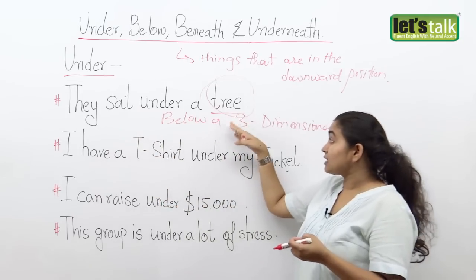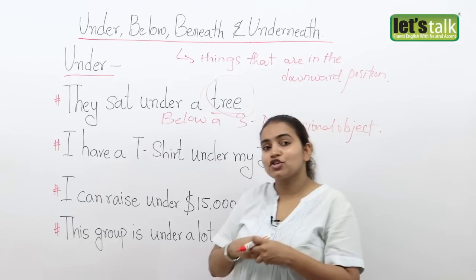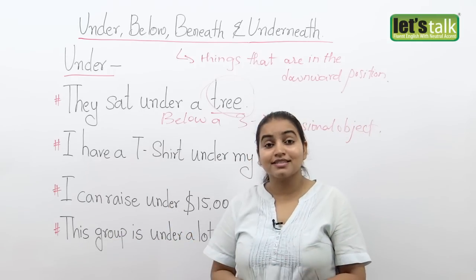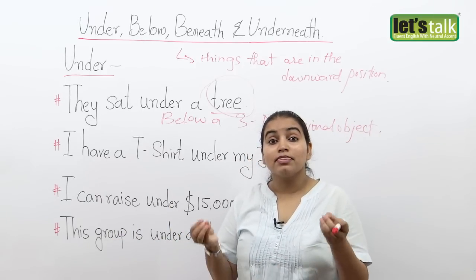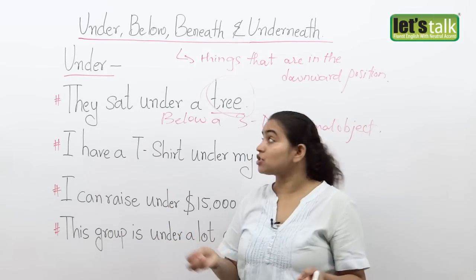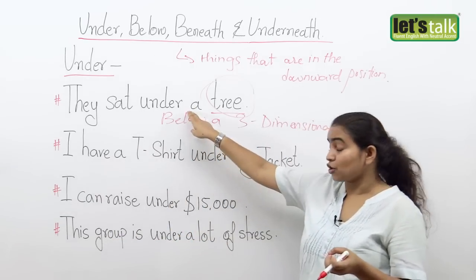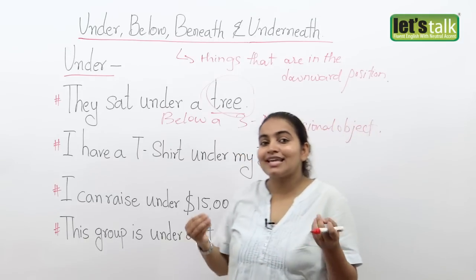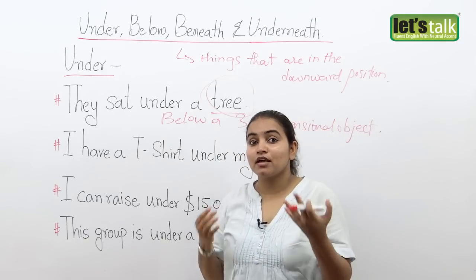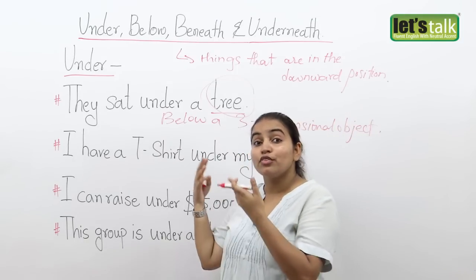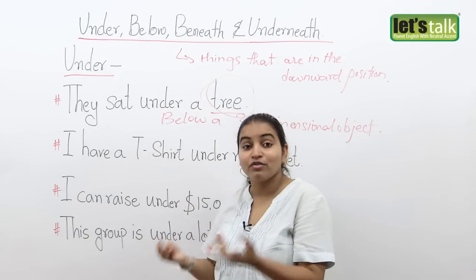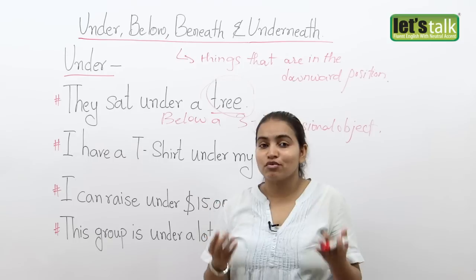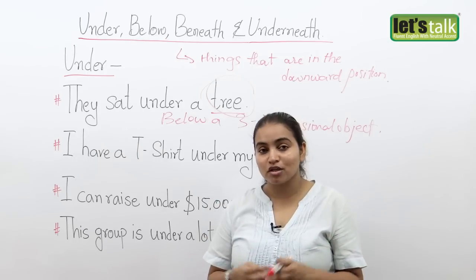For example, I could have a three-dimensional object like a table. I can say that the book was under the table. Or I could say that the cat was sleeping under the chair — the chair again being a three-dimensional object.